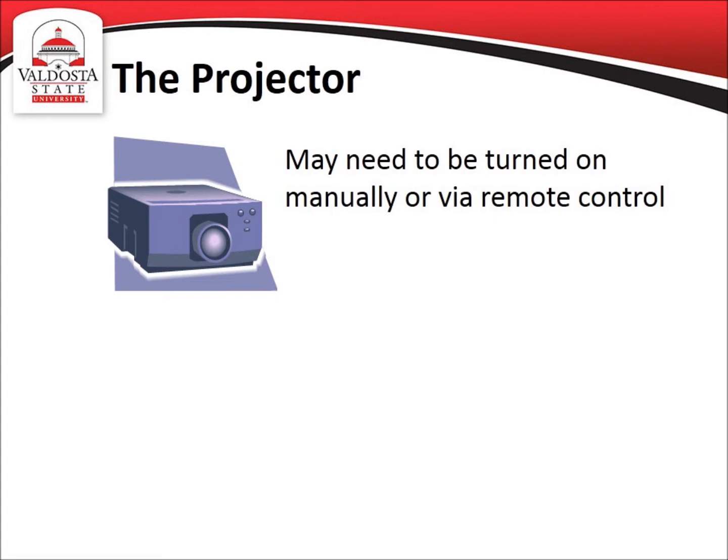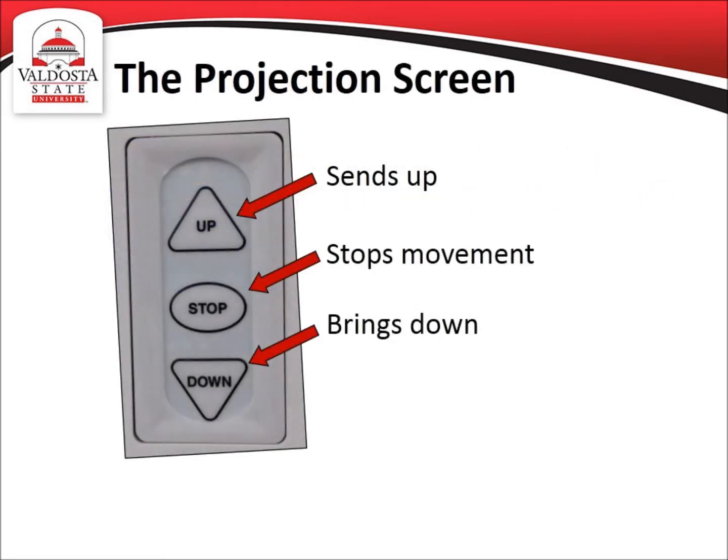If there is a mini remote at the instructor's workstation, you will use that to control the projector. If there is no remote and XPanel does not turn on the projector, you will have to physically press the Power button located at the bottom of the projector. Additionally, the projector screen may need to be activated with the wall switch to lower and raise. The screen switches can be identified as white triangles — one pointing up to send the screen up and one pointing down to bring the screen down. The oval stop button in the center pauses the movement of the projection screen. The screen wall switch is usually located next to the power switch controlling the classroom's lighting, however this is not always the case because classrooms vary.